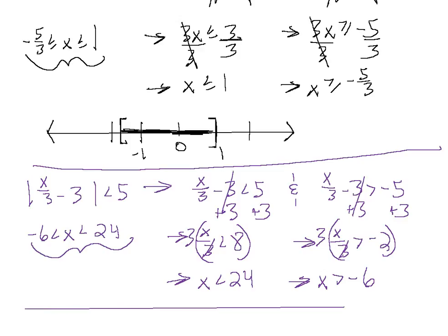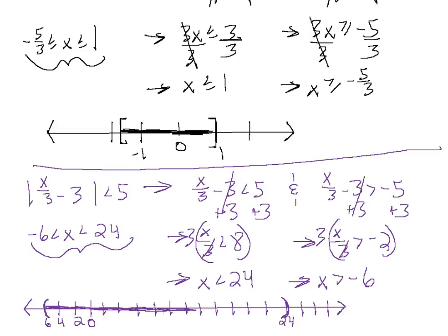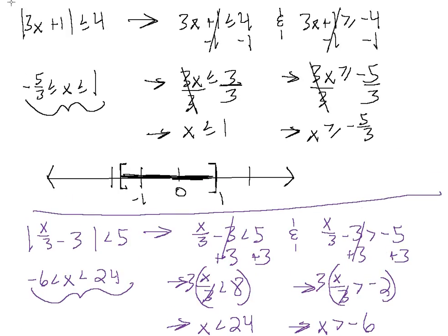We need to scale accordingly because we have a pretty big number. Let's make the number line kind of long and scale it in 2s to make it simpler, going in the negative and positive directions, with 0 in the middle: 2, 4, 6, 8, 10, 12, 14, 16, 18, 20, 22, 24. We want all the values in between minus 6 and 24. Since we're not including the endpoints, we place parentheses at those two points and shade the values in between.